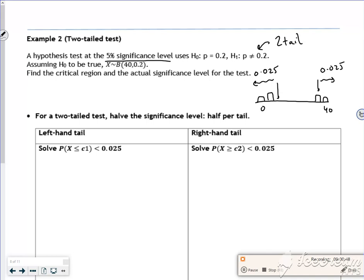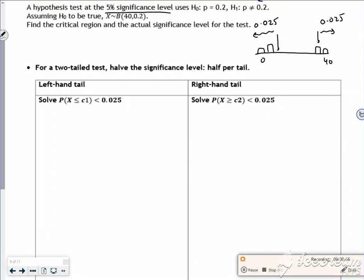Same idea as with normal distribution. For the bottom 0.025, if I do an inverse binomial and set the area to 0.025, that gets me x = 3. I can't know that the critical value is exactly at that point.